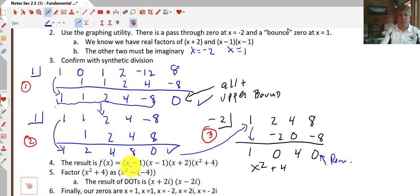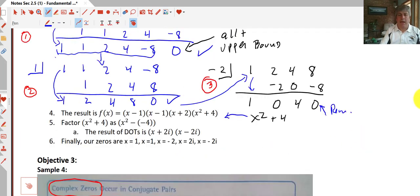So my result so far, I have x minus 1 times x minus 1 times x plus 2 times x squared plus 4. Well, we can factor x squared plus 4 as x squared minus a minus 4 using our difference of two squares. And as we saw earlier in this video, that's going to factor to x plus 2i and x minus 2i. Our fully factored form would be x plus 2i times x minus 2i times x minus 1 squared times x plus 2. And our zeros are 1, negative 2, and plus or minus 2i.